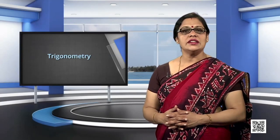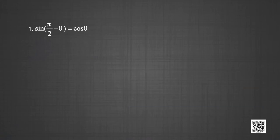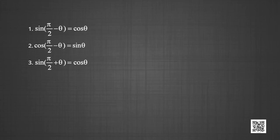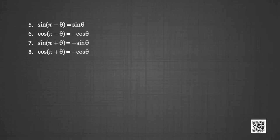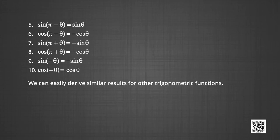We state the following results without proof: sin(π/2 − θ) = cos θ, cos(π/2 − θ) = sin θ, sin(π/2 + θ) = cos θ, cos(π/2 + θ) = −sin θ, sin(π − θ) = sin θ, cos(π − θ) = −cos θ, sin(π + θ) = −sin θ, cos(π + θ) = −cos θ, sin(−θ) = −sin θ, and cos(−θ) = cos θ. Similar results can be derived for other trigonometric functions.